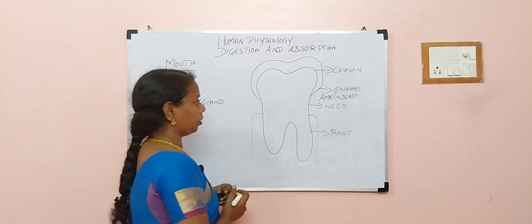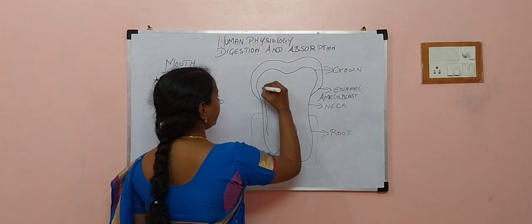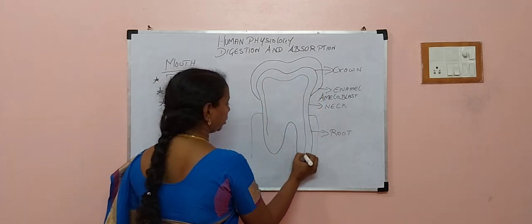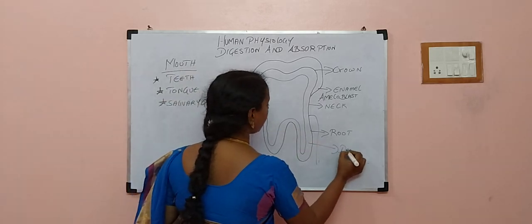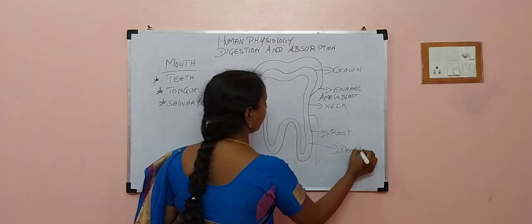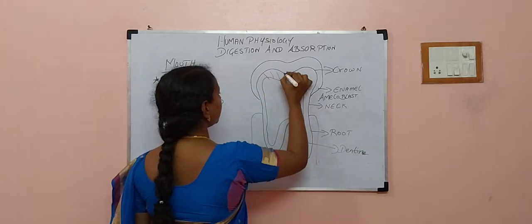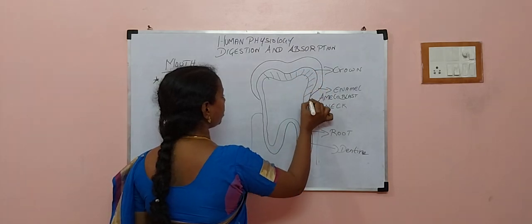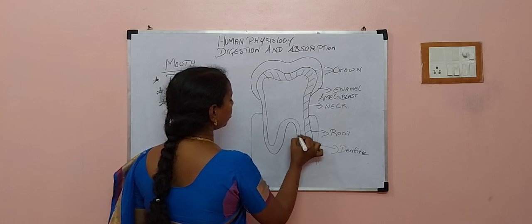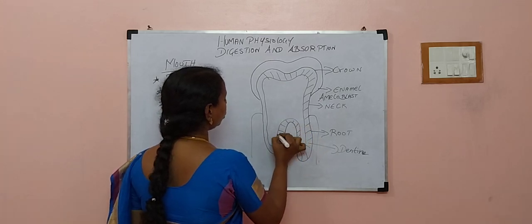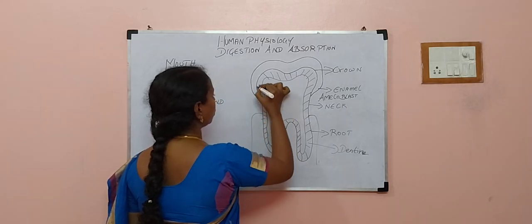Now unlike crown part enamel, we find the dentine portion all over the teeth. So this is dentine. And this dentine is also made up of same calcium substance just like enamel, but it is found all throughout the teeth portion, not restricted only to the crown alone. And this is secreted by odontoblast cells.